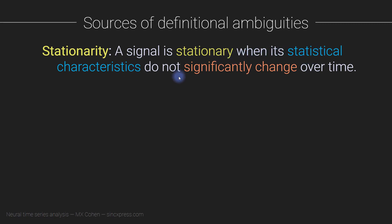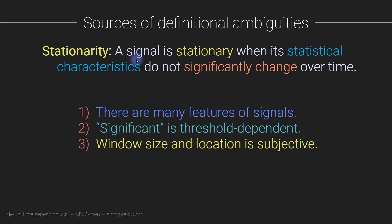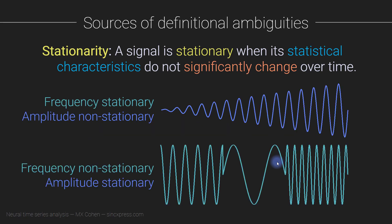So returning to the definition: a signal is stationary when its descriptive statistical characteristics do not significantly change over time. The three sources of definitional ambiguity are: the many possible features of signals that could be examined; the concept of 'statistically significant change' being arbitrary, threshold-dependent, and test-dependent; and the window size and location also being open to interpretation.